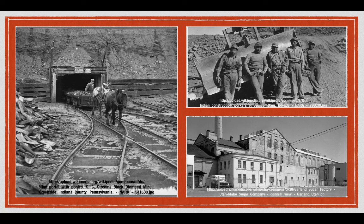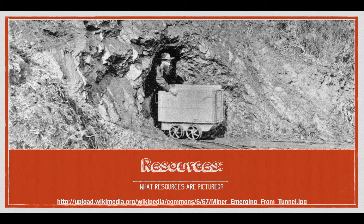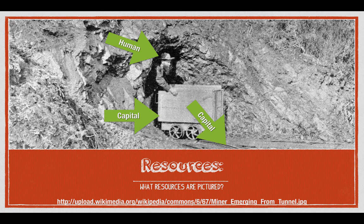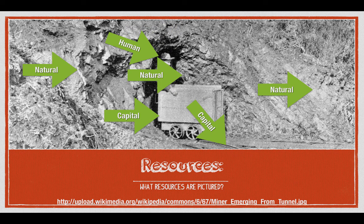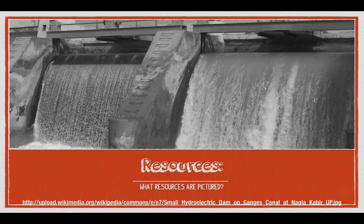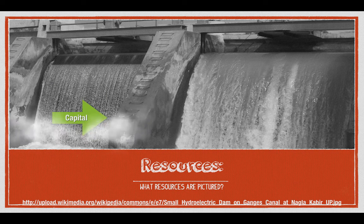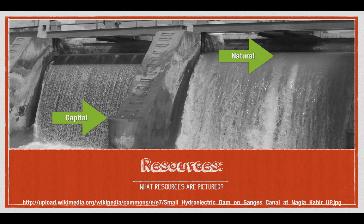So what resources are pictured in this image? We have a human resource, we have a capital resource, and the rails that the cart is rolling on is another capital resource. Then we have natural resources all around because he's coming out of the earth — he's digging something out. He's a miner emerging from a tunnel. Next, here's a hydroelectric dam in India. The resources pictured: capital resource because the dam is man-made, and the natural resource of the water flowing over it. Those are the only two resources in that picture.